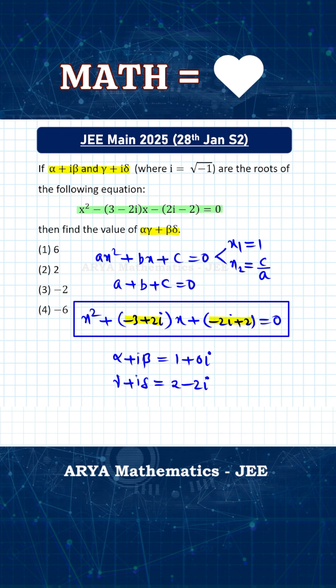And now we have to calculate this one, we have to find alpha gamma plus beta delta. Alpha is 1, gamma is 2, so this will be 2. Beta is 0, delta is minus 2, so beta delta will become 0. Therefore, the correct answer for this problem is second option.